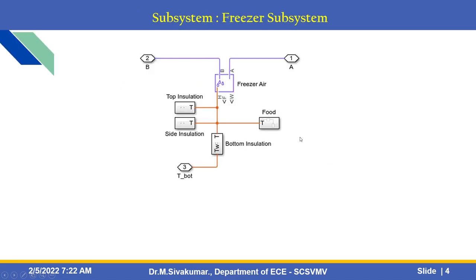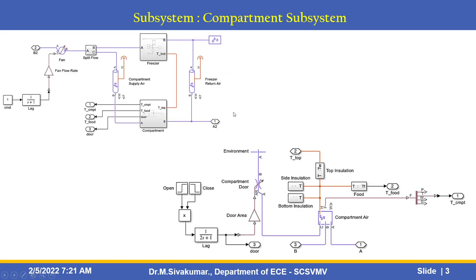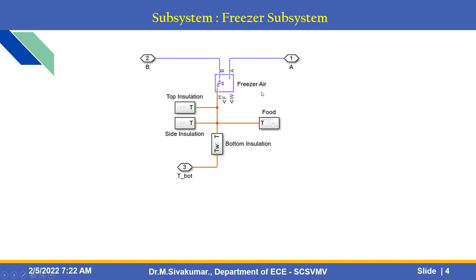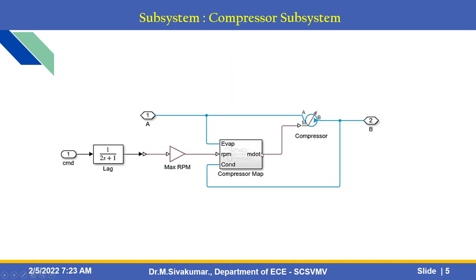There are top insulation, side insulation, and bottom insulation compartment subsystems. This is the freezer subsystem — if you double-click on the freezer, you get this freezer subsystem. It has top insulation, side insulation, freezer air block, and bottom insulation blocks.